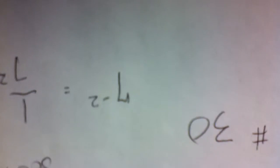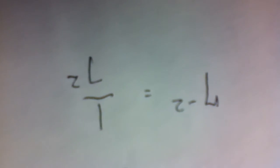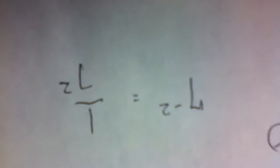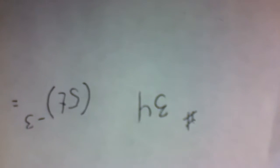Here's number 30. 7 to the negative 2 equals 1 over 7 squared. That's all. Enter 1 over 7 squared in the system and you got it. Number 34.